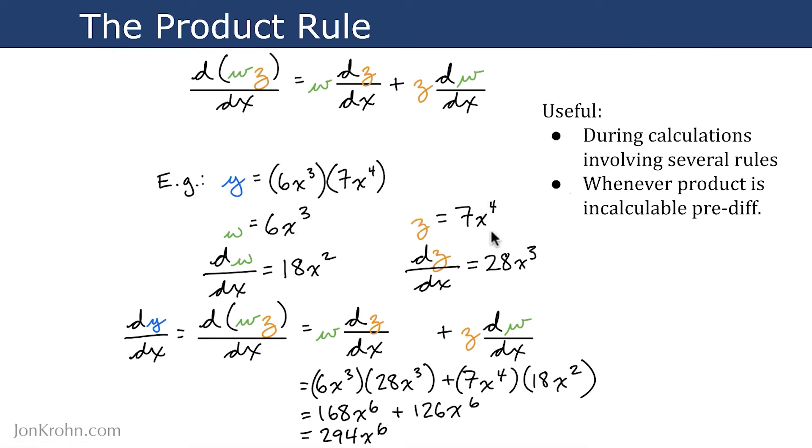Now we can calculate the derivative of w and z separately, and it's a piece of cake. So we can use the power rule, which we learned earlier. So dw/dx is 18x squared according to the power rule as well as the constant multiple rule. So x to the power of 3 becomes x to the power of 2. We bring the 3 in front, multiply that by the 6, and that gives us 18.